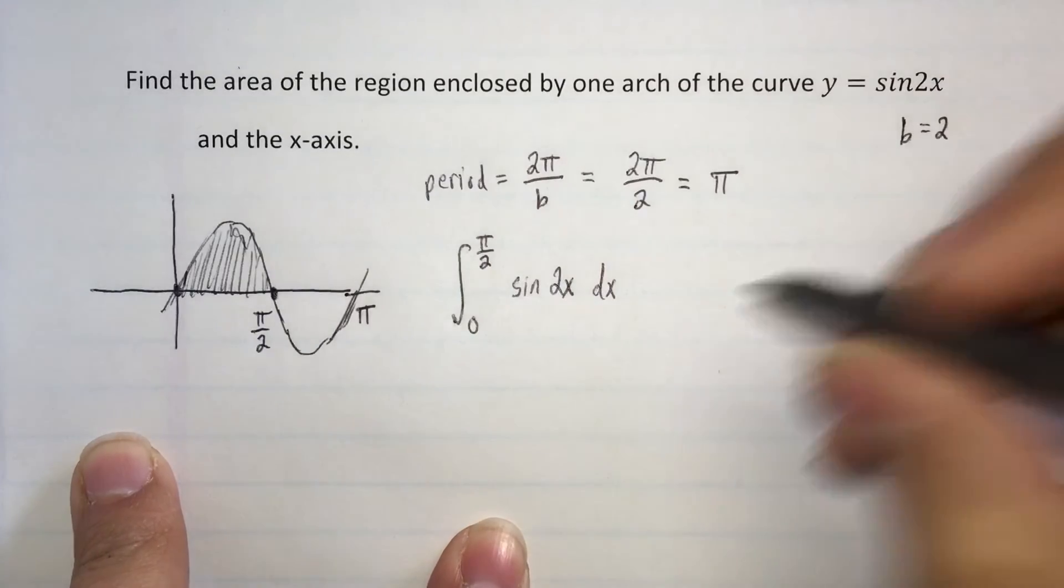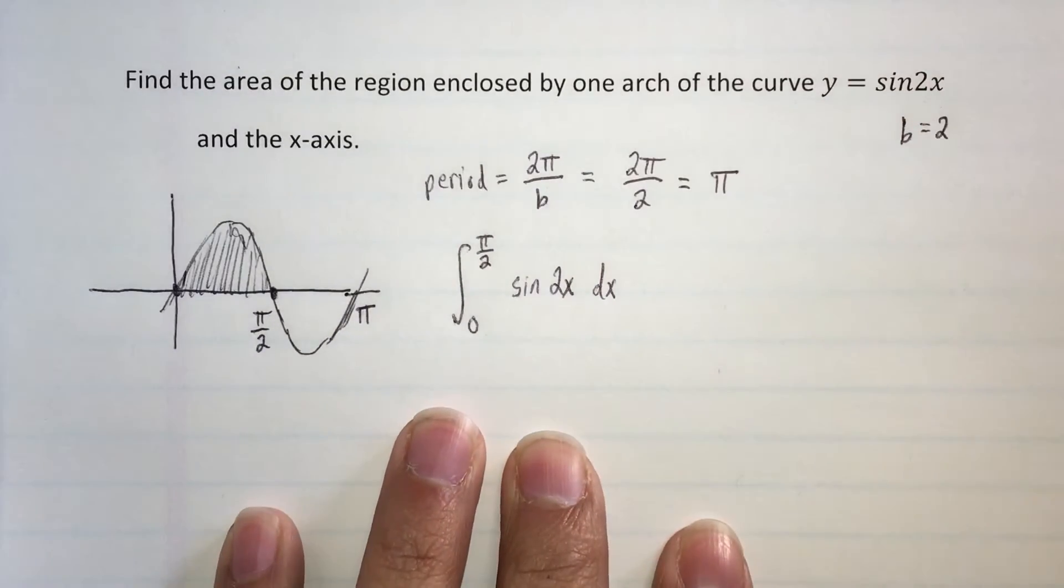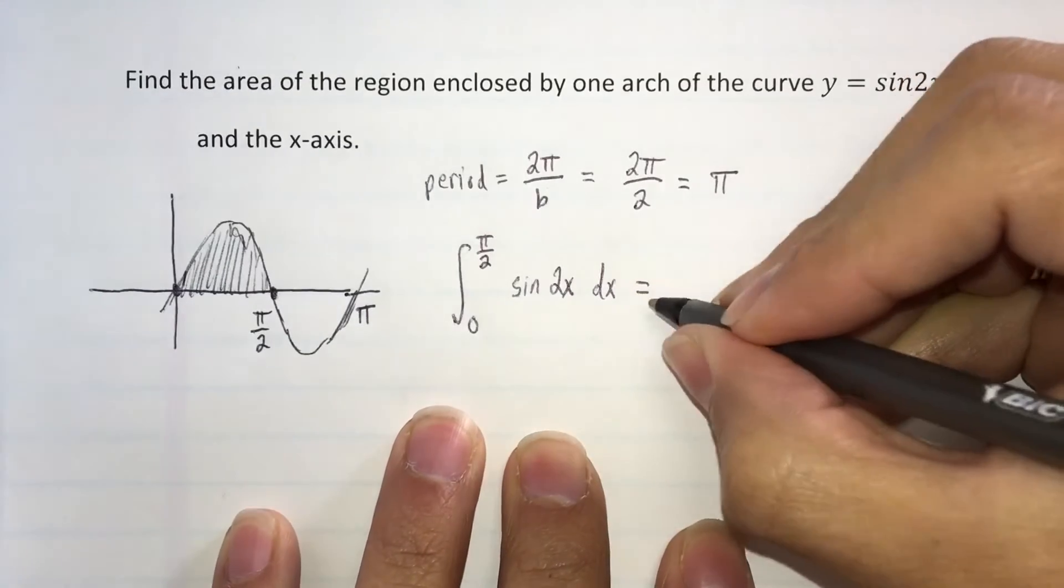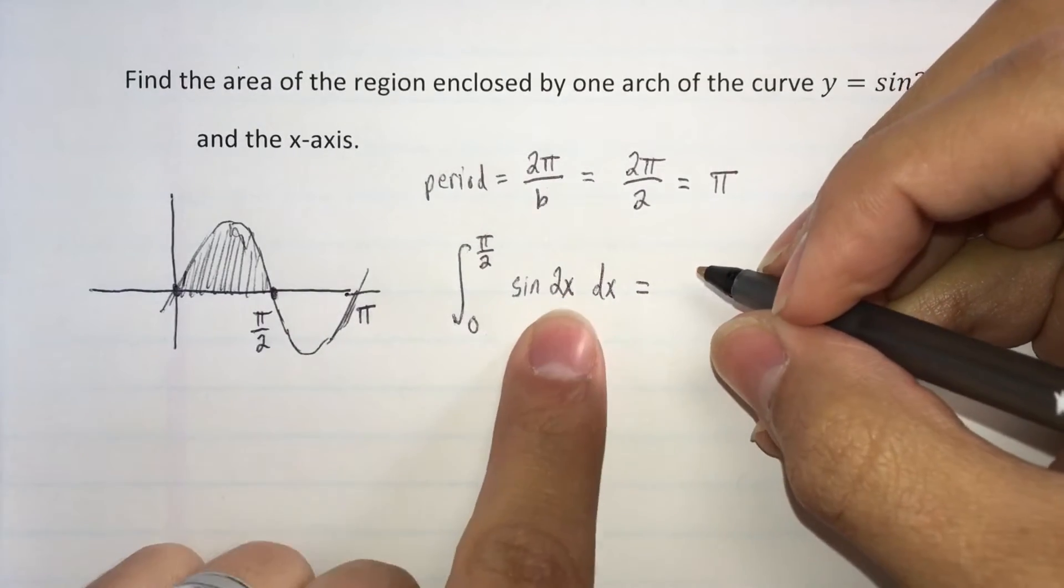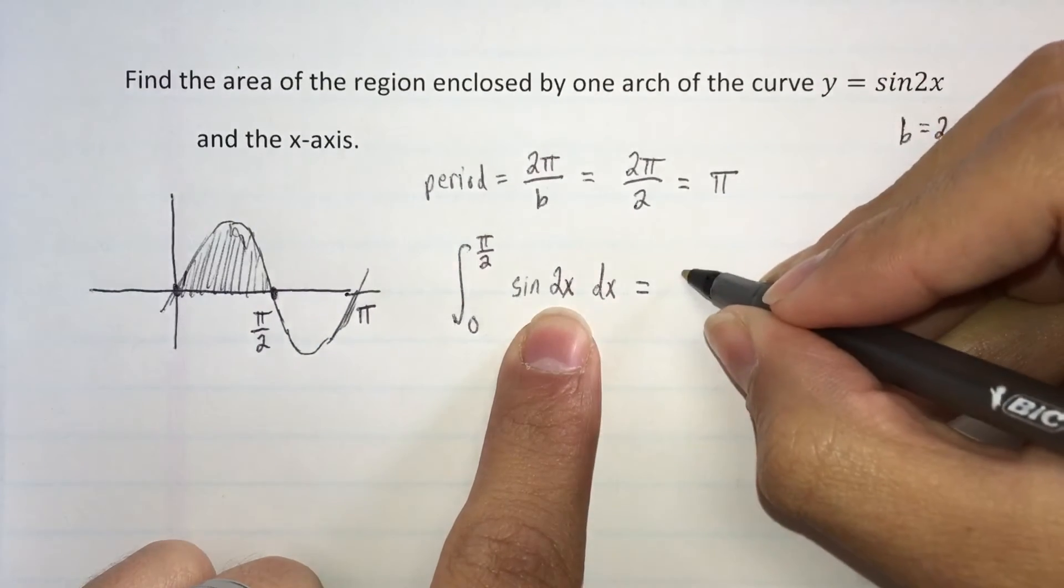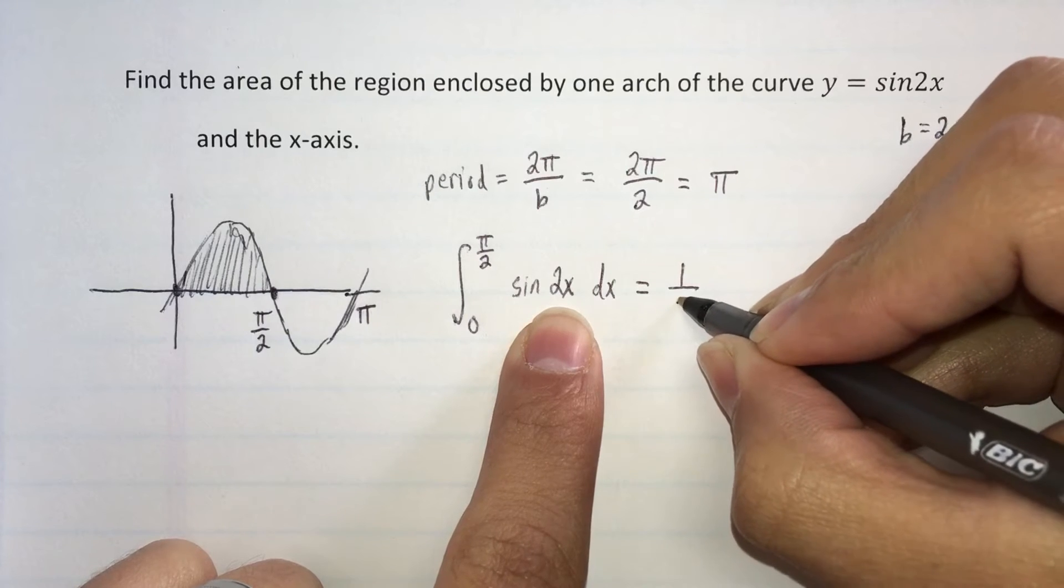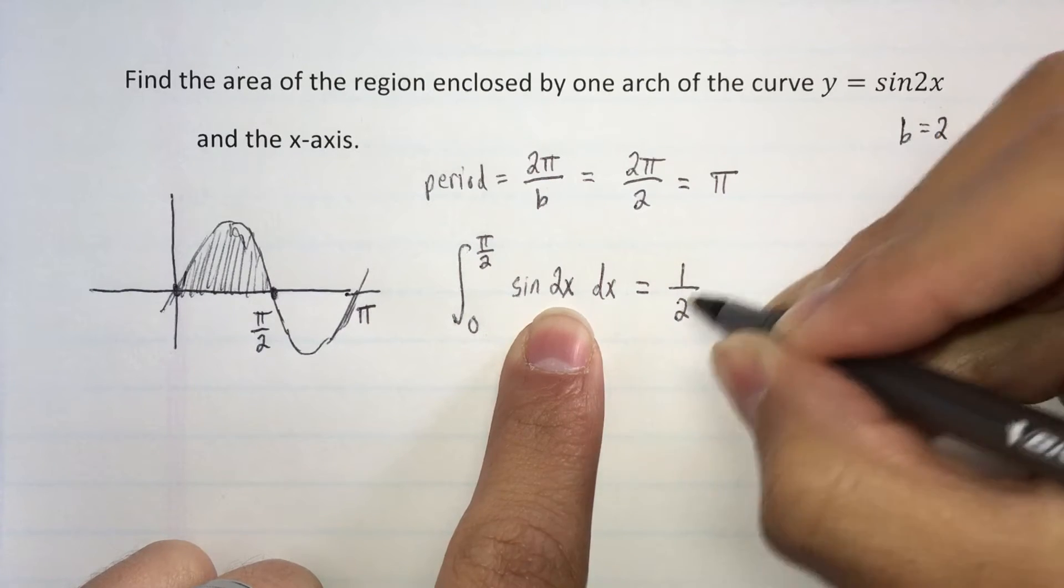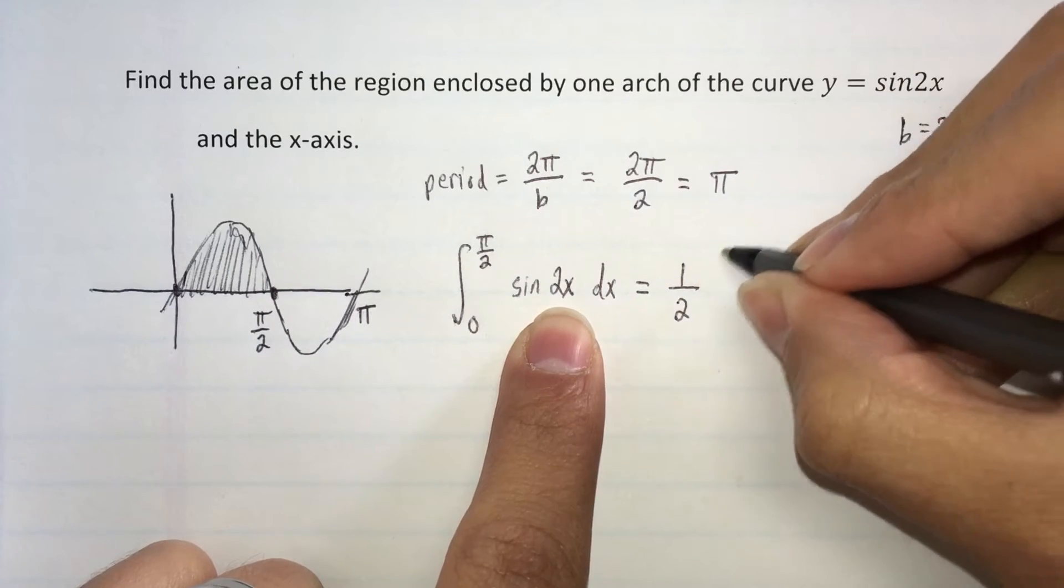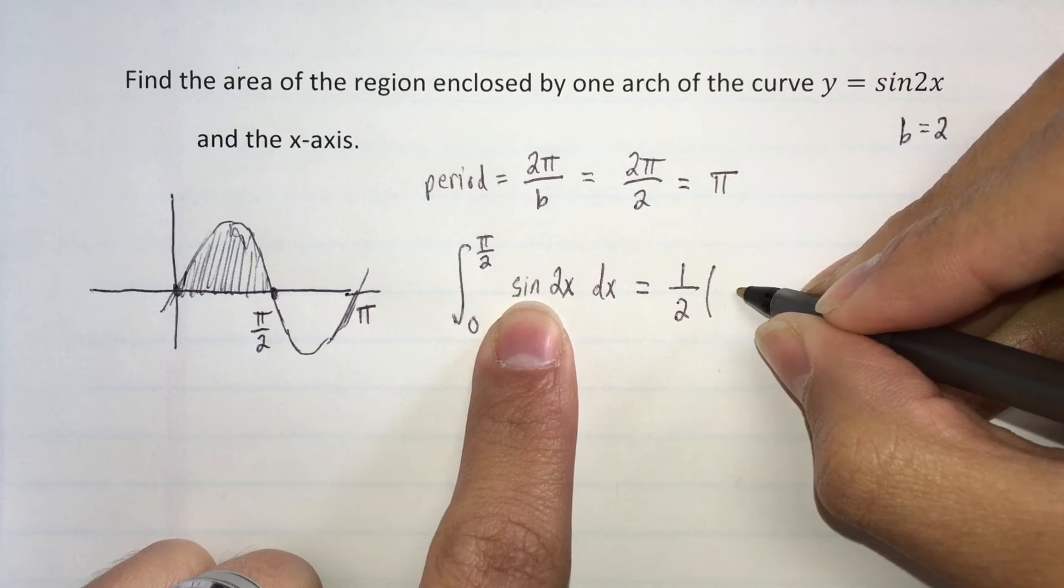The next step is to find the antiderivative. Because we have a 2x in there, that's a linear, we would have to multiply by the reciprocal of the derivative of 2x, that's 1/2. So it's 1/2 times, and the antiderivative of sine is negative cosine.